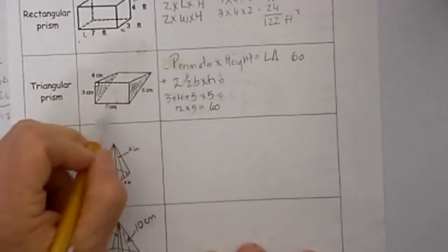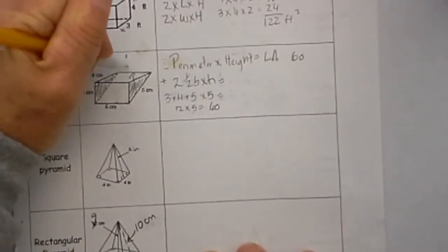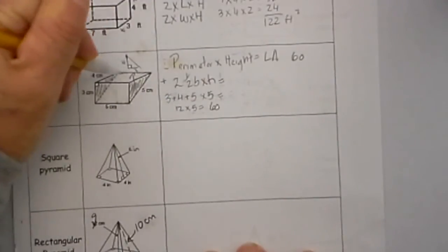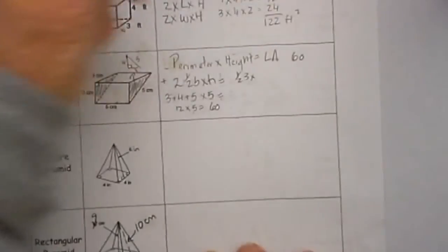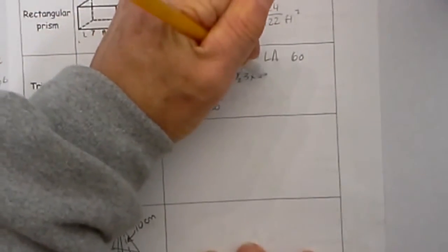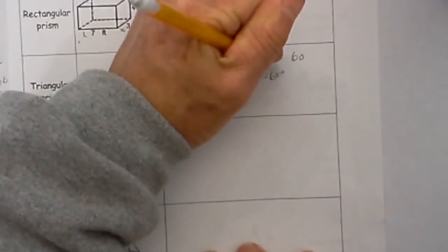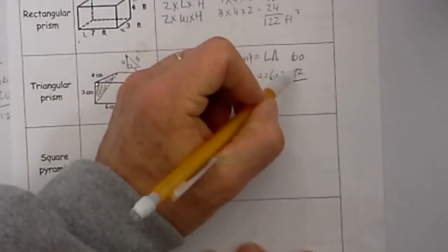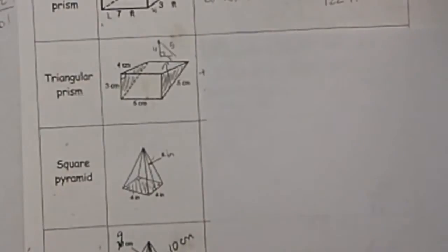Now we calculate the area of the two triangular bases. If you redraw the triangle, one side is 4, another is 3, and the hypotenuse is 5. So it's ½ times the base (3) times the height (4): 3×4=12, half of that is 6. Since there are two bases, 6×2=12. Adding the lateral area and base areas: 60+12=72 centimeters squared.